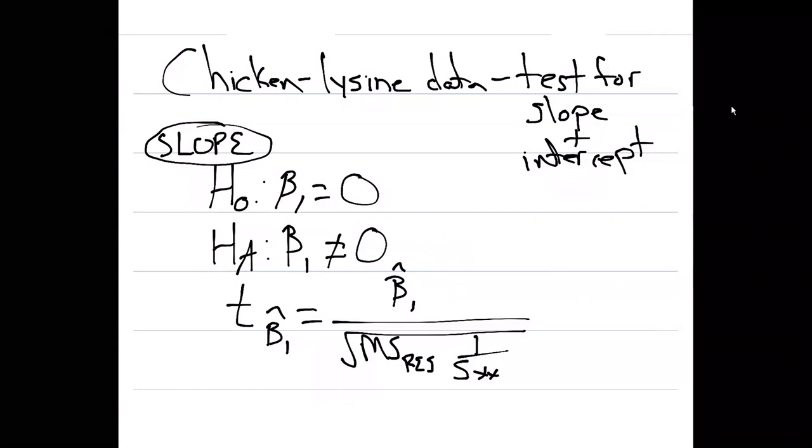What we want to do is a test for the slope and intercept of this regression line. Now there's a relationship between lysine and the amount that a chicken gains weight, but we want to know if beta zero and beta one are any good. Are they different from zero? And so we've got a hypothesis test for that.